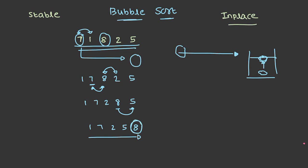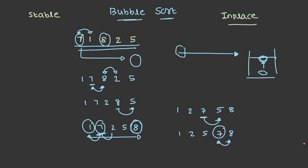If we repeat the process: 1 and 7 are in their respective positions; 7 and 2 need to be exchanged, so that happens. After the comparison at the second position, comparison at the third position happens: 7 and 5 need to be exchanged. 7 and 8 are already in order. At the end of the second iteration, 7 is in its correct position. This is how bubble sort works.